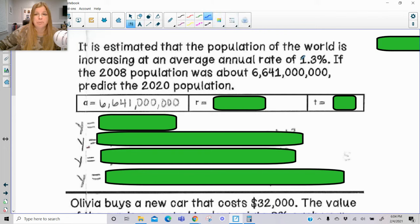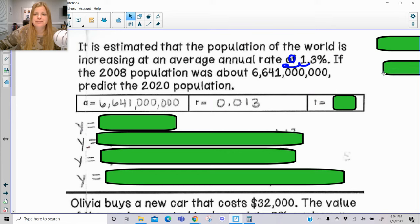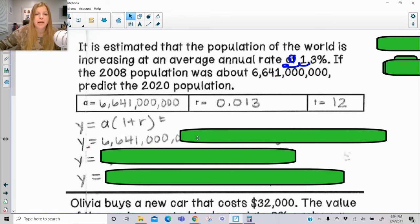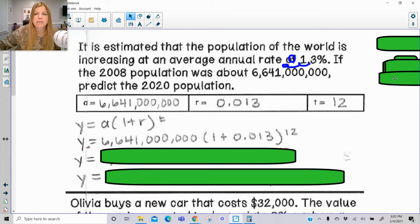Remember, we take the decimal in our percent and we move it two spots to the left. And now time, 2008 to 2020, we know is 12 years. So I have my formula. I substitute my value for a, my value for r, my value for t.